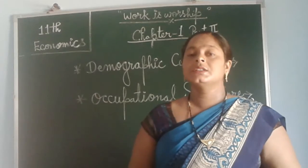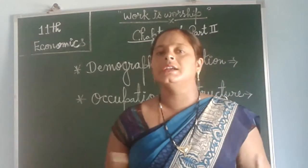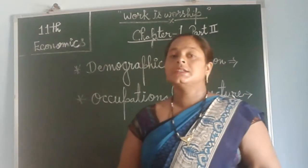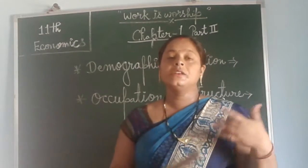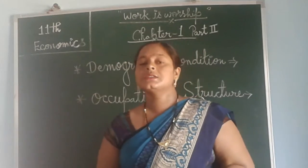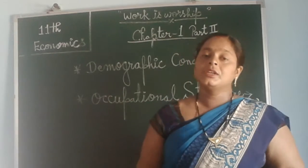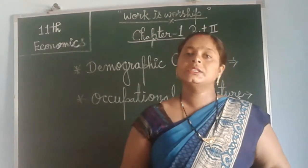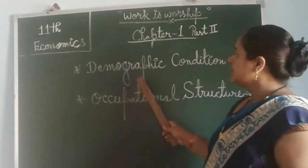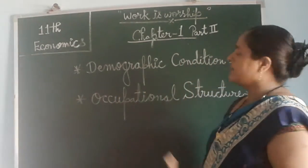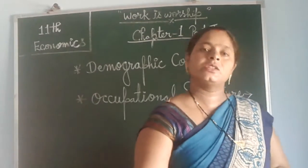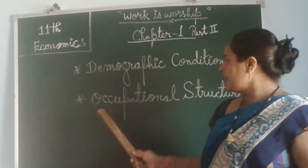Life had no certainty at that time — it was only 32 years. But after that, India gave much more attention to healthcare, food production and food security, and life expectancy increased to 63 years. In this way, we have read about the demographic condition — the situation of the population at that time.